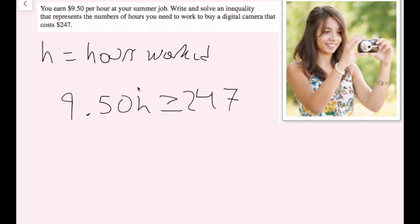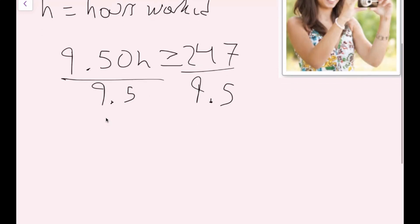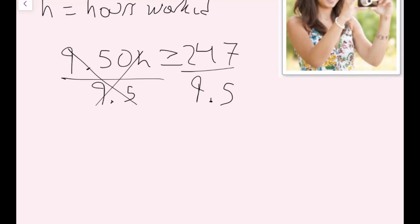Now I want to see what's happening to my variable h. I'm multiplying it by 9.5, so I'm going to divide by 9.5 on both sides. The reason I'm saying 9.5 is that it's just easier to work with — the trailing zero is unnecessary, though when we're dealing with money we go to two decimal places. These cancel on the left side, so I get h is greater than or equal to 247 divided by 9.5.